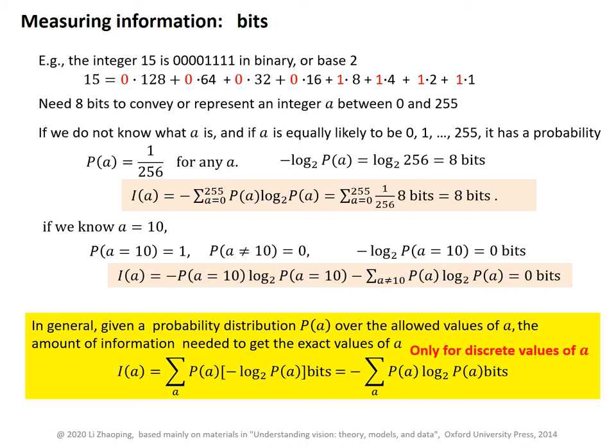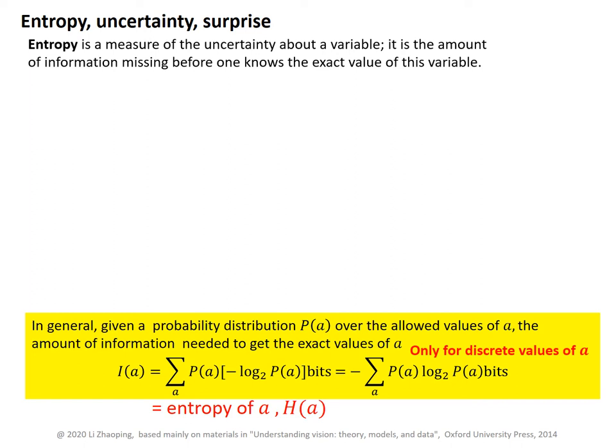This formula for the amount of information needed to know A applies only to the case when A takes discrete values. In such a case, this amount of information is equal to the entropy of A, and this entropy is denoted as H(A). Entropy is a measure of the uncertainty about a variable. It is the amount of information missing before one knows the exact value of this variable. Minus log base 2 of this probability is also called the surprise about A.